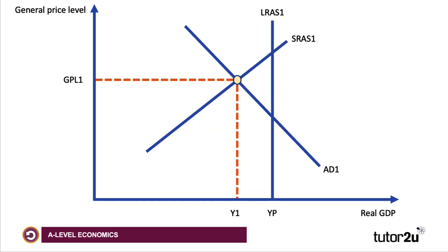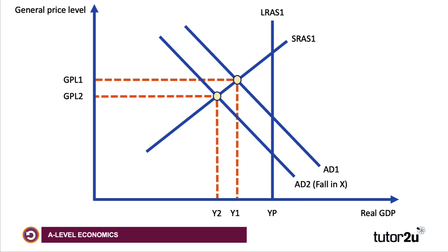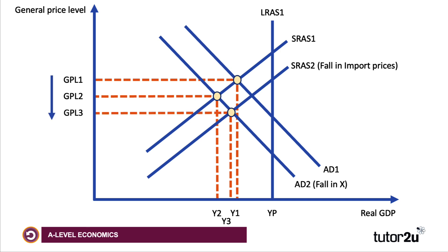You'd want to support your analysis with a diagram. A fall in exports might cause a fall in AD — I've labelled it AD1 to AD2 with brackets saying 'fall in exports', just to tell the examiner you're highlighting that impact. That takes the equilibrium price level down to GPL2. We also said a strong exchange rate brings down the price of imported components and energy, causing aggregate supply to shift outwards to SRAS2, labelled 'fall in import prices'. This shows prices will come down still further, with the rate of inflation falling to GPL3.